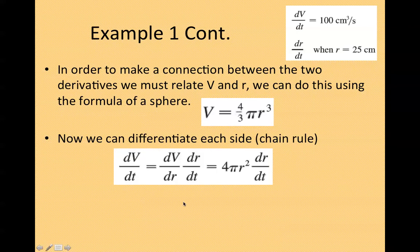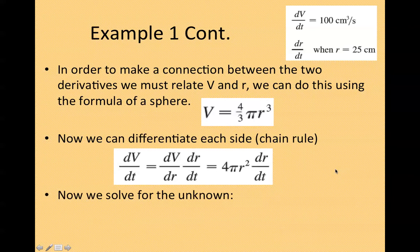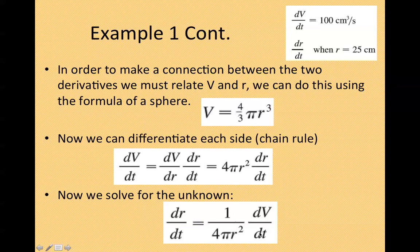Now we can differentiate each side and we're going to use the chain rule for that right side. Once we differentiate this side, we get 4 because 4/3 times by 3 is 4 π R².